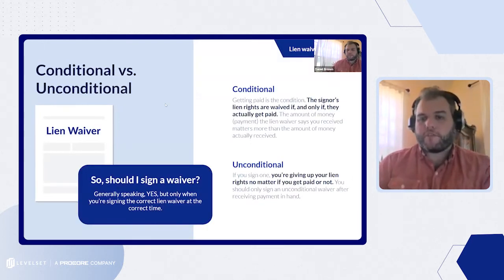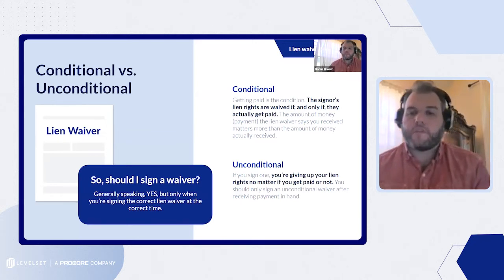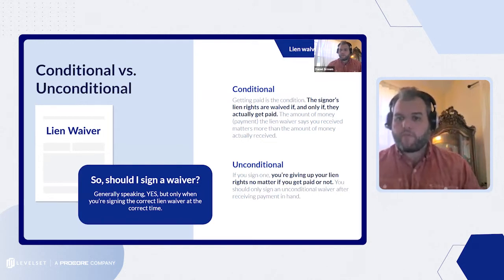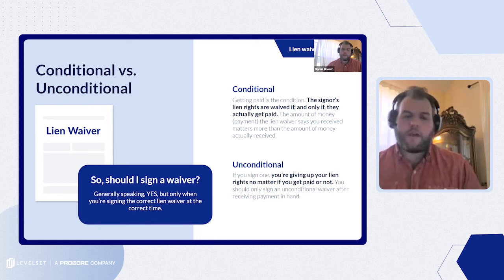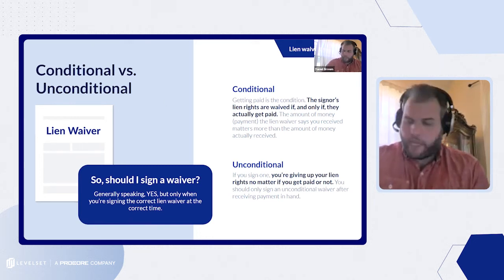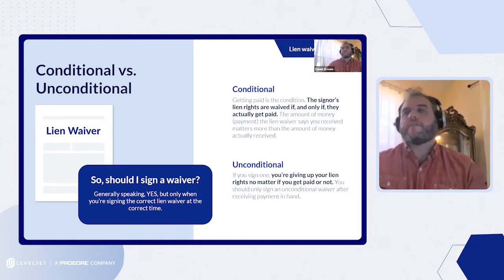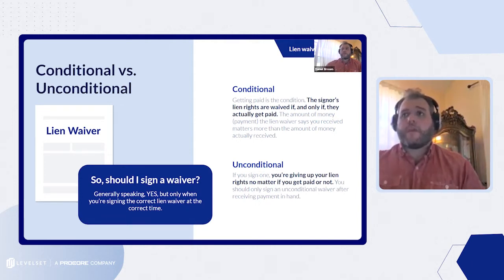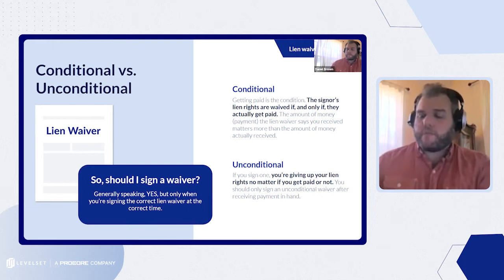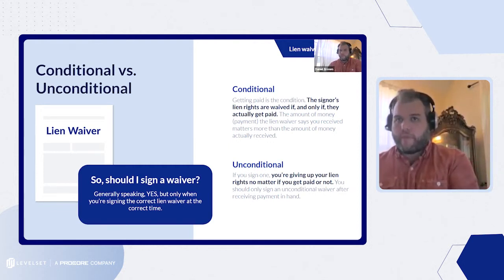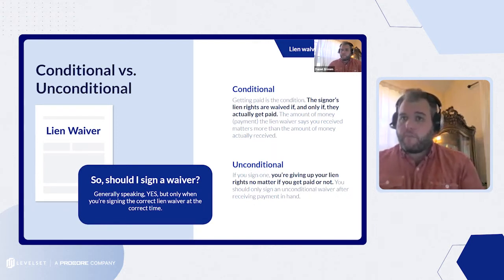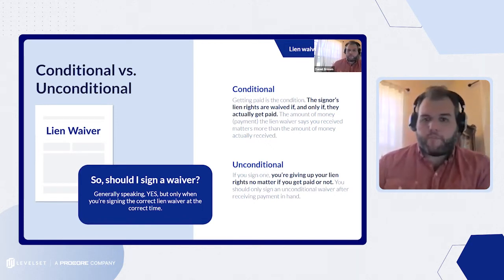The difference between conditional and unconditional is pretty simple. A conditional waiver states it is only effective if you actually get paid the amount stipulated on the waiver. Unconditional means you're signing away your lien rights on that much money for that job right there in the document. You should always sign a waiver, but only if you're signing the correct lien waiver at the correct time. Signing the wrong waiver could mean giving up some of your lien rights. Sending or requesting the wrong waiver could delay payment, because owners and lenders don't release payment until they've collected all the waivers for that pay application — and if some are the wrong type, that can hold up payment for the entire chain.